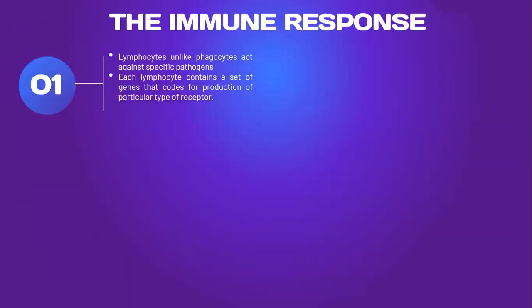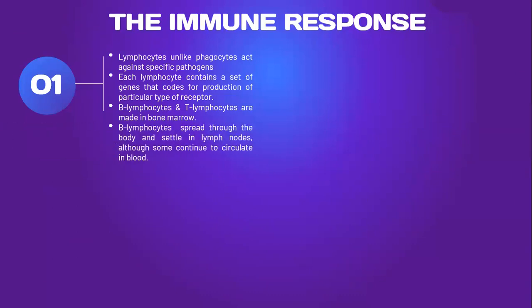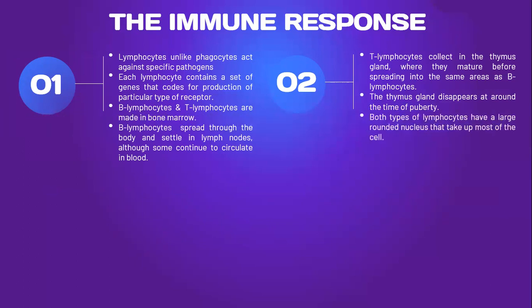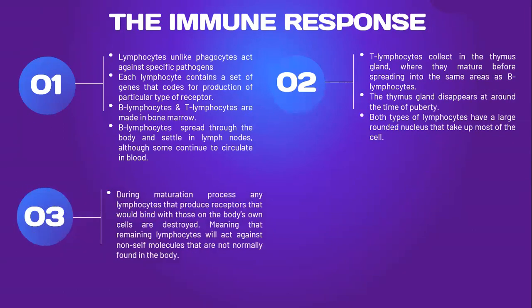Lymphocytes, unlike phagocytes, act against specific pathogens. Each lymphocyte contains a set of genes that codes for production of a particular type of receptor. B-lymphocytes and T-lymphocytes are made in bone marrow. B-lymphocytes spread through the body and settle in lymph nodes, although some continue to circulate in blood. T-lymphocytes collect in the thymus gland where they mature before spreading into the same areas as B-lymphocytes. During the maturation process, any lymphocytes that produce receptors that would bind with those on the body's own cells are destroyed.